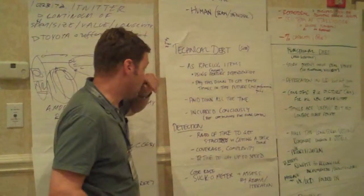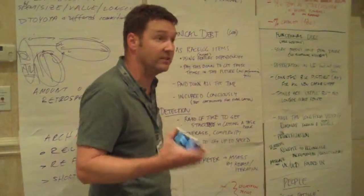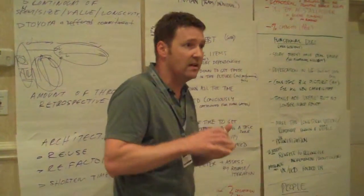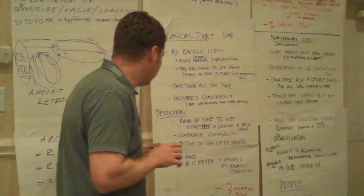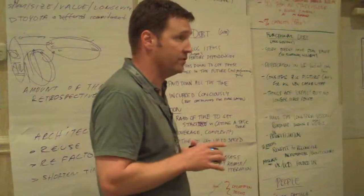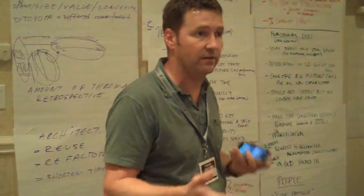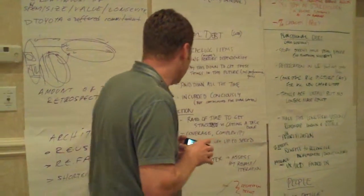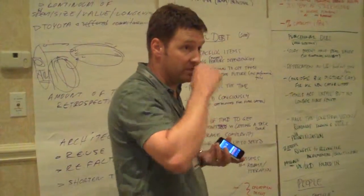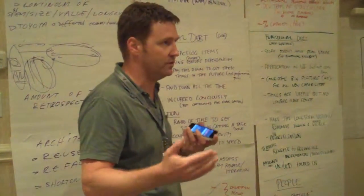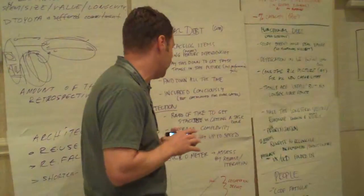We spent most of the time on technical debt. We talked about detection of technical debt. Some of the more interesting stuff was the ratio of time it takes to get a technical task started — the developer picks up the task and is foraging around in the code to figure out how to get started. That's a clear indicator of technical debt if that ratio is really high. Code coverage and static code analysis are another way you can trend that over time. The time to get a new developer up to speed on your code base is also a pretty clear indicator of debt. There's also a code base sucka meter — Crap4j is an automated one, but there's also a manual version where you poll the team at the end of each iteration asking how they feel about the code base, and trend that over time.